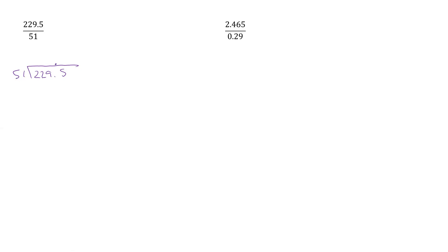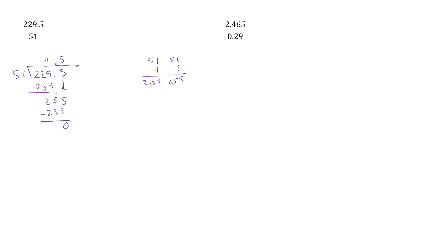Now, 5 times 4 will give us 20. We have 22, so if we take 51 times 4, that'll be 204. Subtract that off: 9 minus 4 is 5, 2 minus 0 is 2. Now we bring down our 5. 5 times 5 will give us 25, so that's 255. Subtract that off, we have 0, so this is just equal to 4.5.